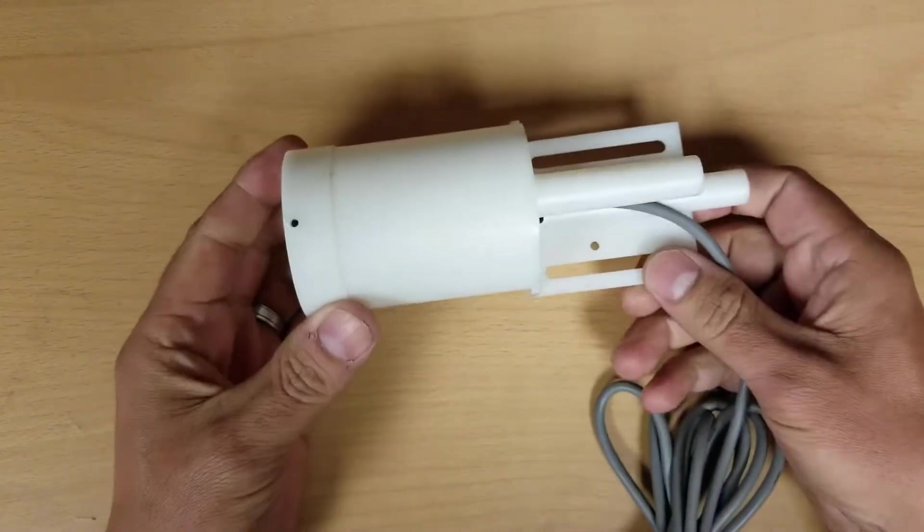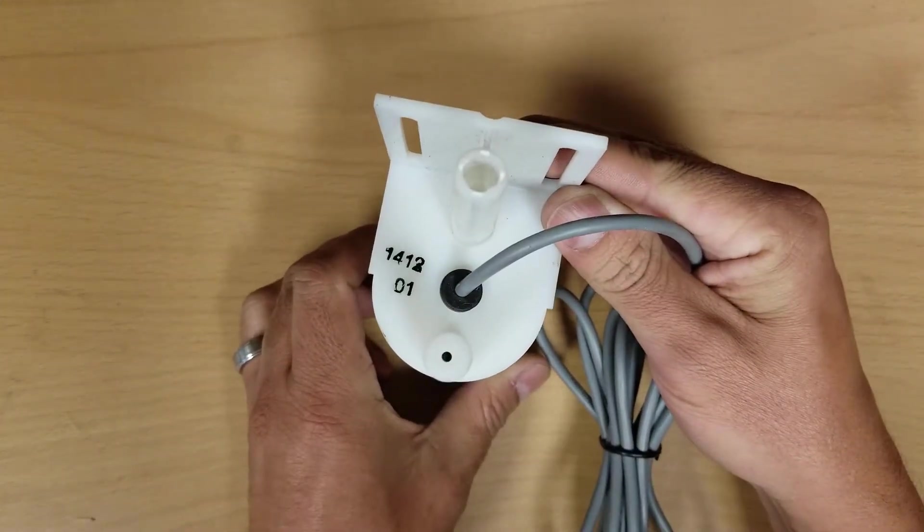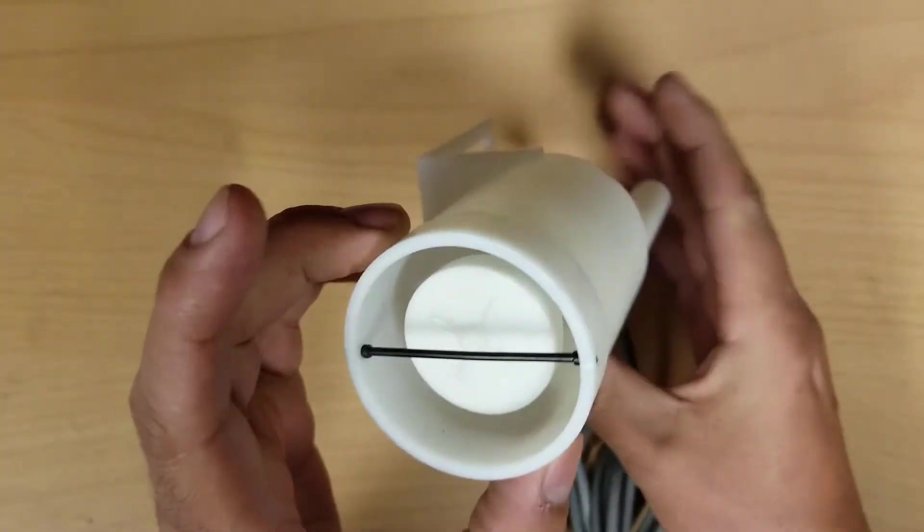Right here is the Float Switch. This is the top of it, side view, and the bottom view.